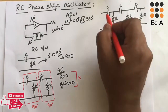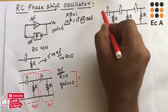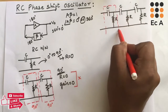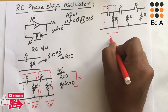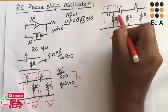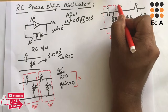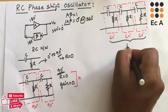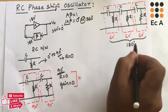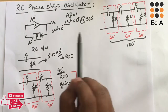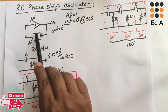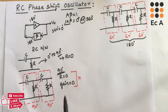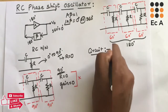If we use 3 RC networks in the feedback stage, each RC network will provide a phase shift of 60 degrees. So the overall phase shift of the three networks will be 180 degrees. The feedback network will now provide 180 degrees, and we need to choose an amplifier that also provides 180 degree phase shift.